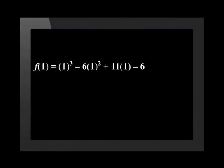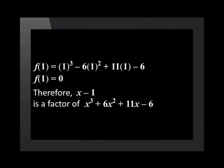f(1) is equal to 1 cubed minus 6 multiplied by 1 squared plus 11 multiplied by 1 minus 6. This is equal to zero. Therefore, x minus 1 is a factor of x cubed minus 6x squared plus 11x minus 6. We found the first factor of the expression.